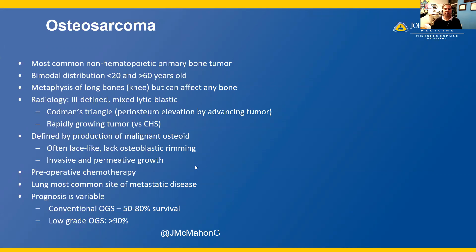Osteosarcomas are often invasive and have permeative growth, and generally grow rapidly — in contrast to conventional chondrosarcomas, which are more slowly or indolently growing tumors. The majority of osteosarcomas are treated with neoadjuvant chemotherapy, with a couple of subtypes not generally having recommendations for it. Lung is the most common site of metastatic disease. The prognosis is variable, with conventional osteosarcomas having 50–80% survival, while low-grade variants have greater than 90% survival.